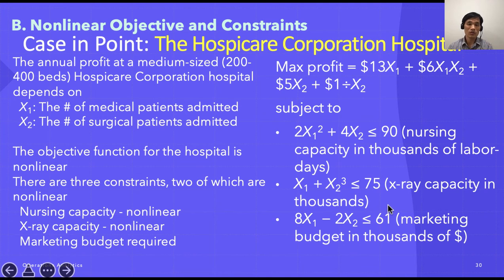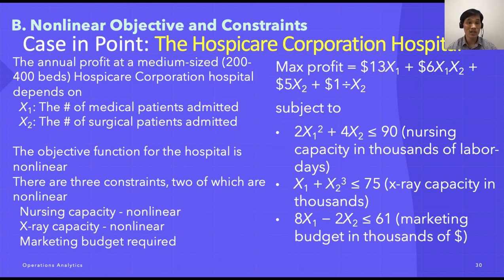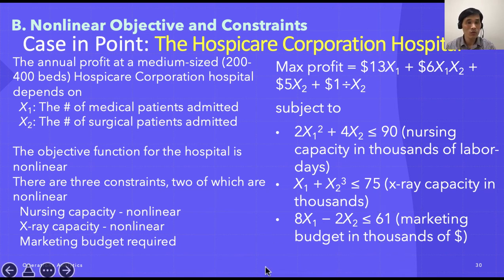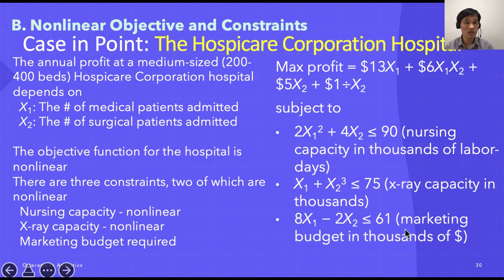The third constraint is the marketing budget: 8x1 − 2x2 ≤ 61. For medical patients, it takes a lot of money to advertise and draw them to the hospital. For surgical patients, you don't need to spend as much because they already have medical problems and will come regardless. The total marketing budget is $61,000.